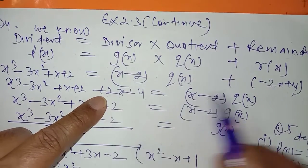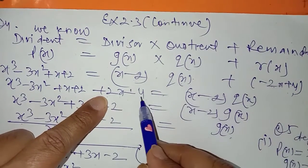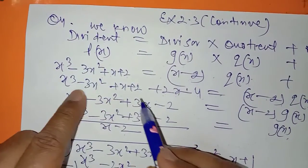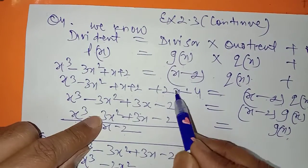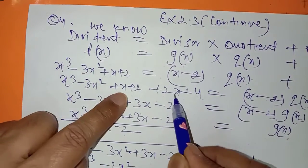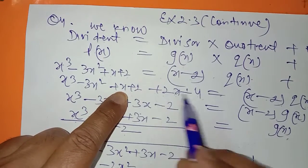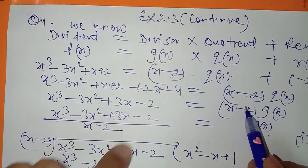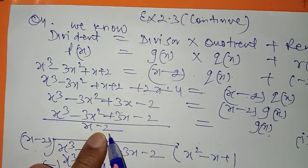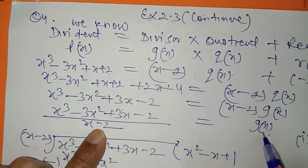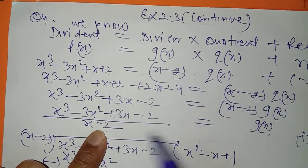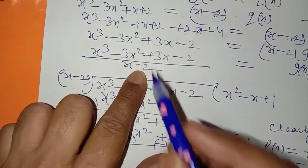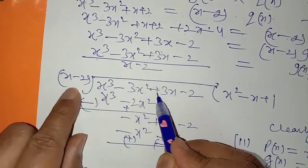Take 2x to the left hand side: plus x ہو گیا، یہ minus کا ہو گیا، یہ as it is رہا۔ x cube minus 3x square plus 3x آ گیا، اور minus 4 plus 2 equals minus 2 آیا۔ اب یہ multiplication ہے، تو ادھر آ کے یہ divide ہو جائے گا اس سے، اور qx آ جائے گا۔ Simple اس کو اس سے divide کرنا ہے، اور divide کرنا آپ کو آتا ہے۔